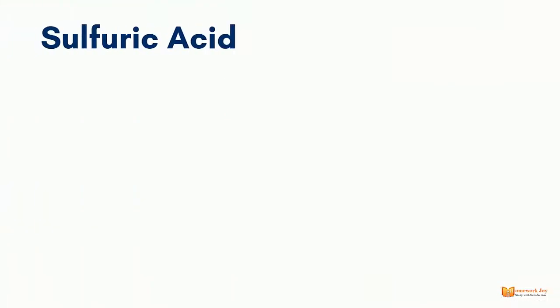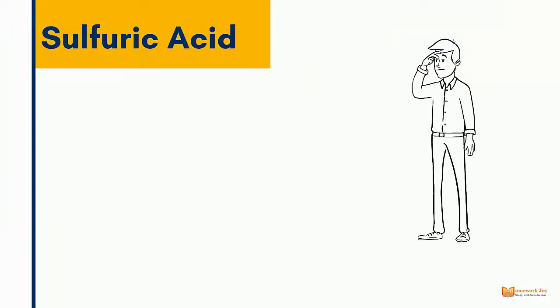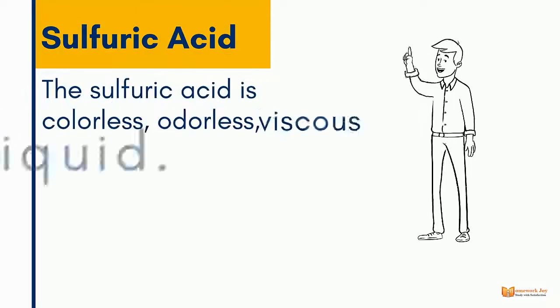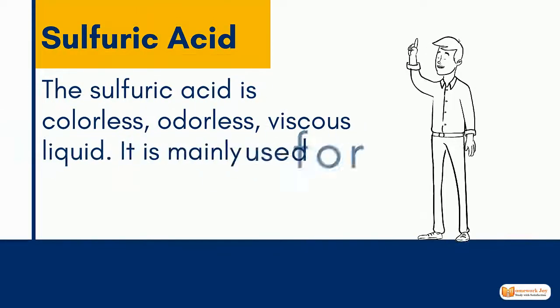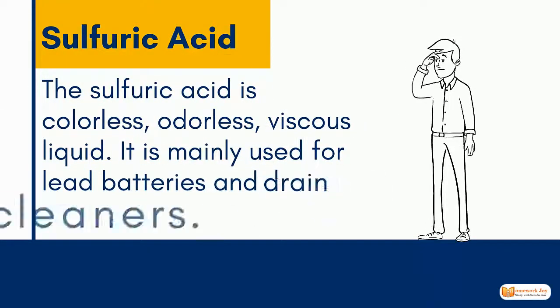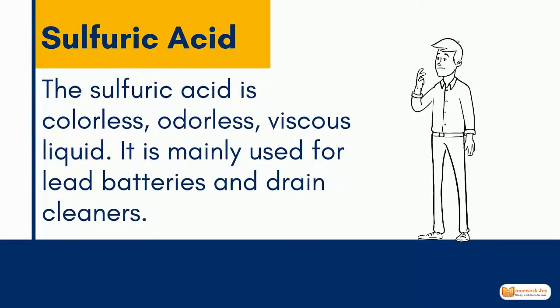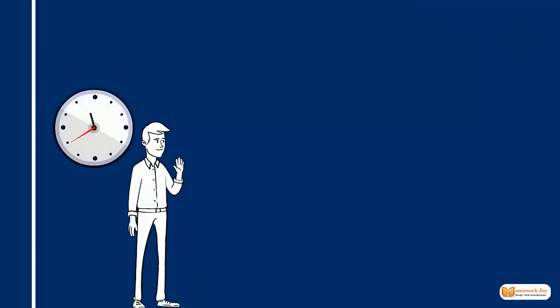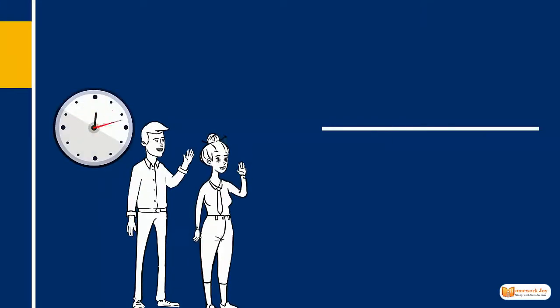Sulfuric Acid: Sulfuric acid is colorless, odorless, and viscous. It is used for lead batteries and rain cleaners.